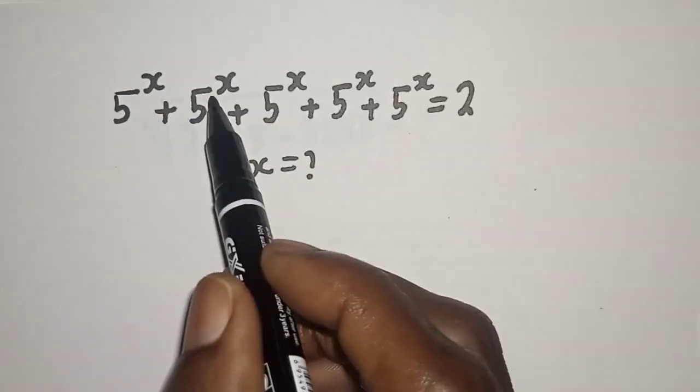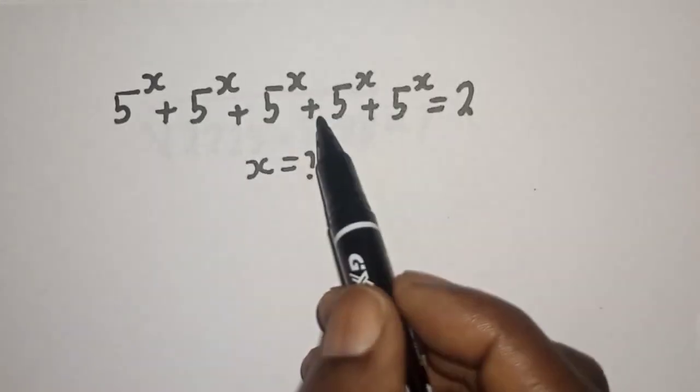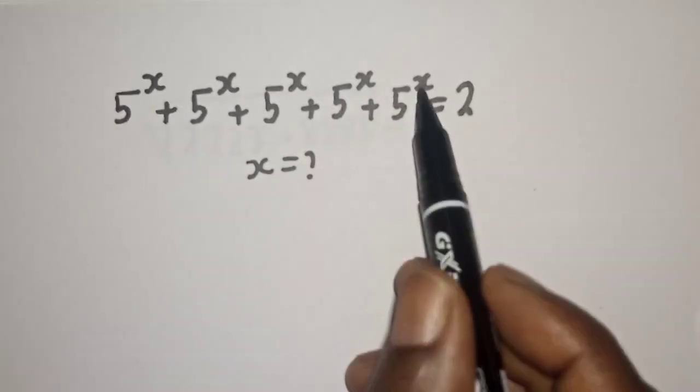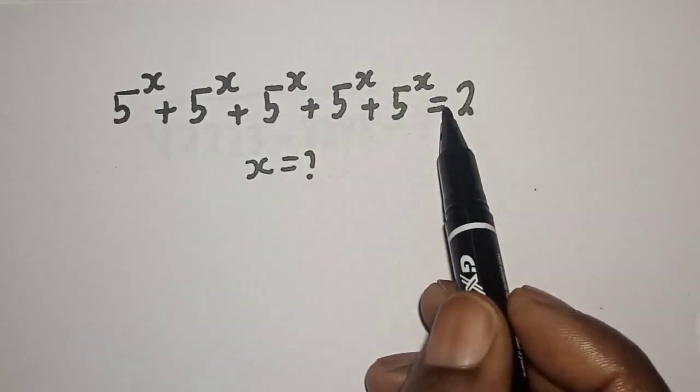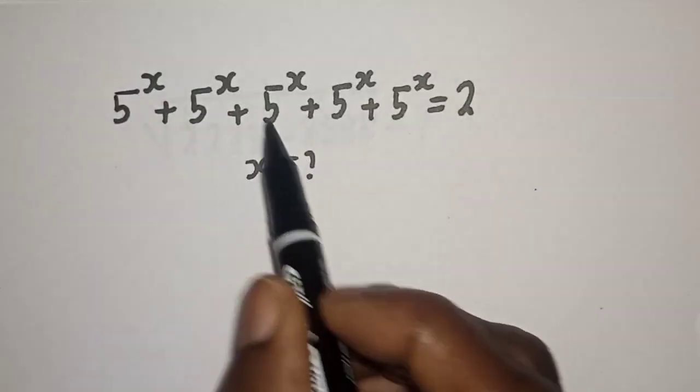5 raised to power s, plus 5 raised to power s, plus 5 raised to power s, plus 5 raised to power s, plus 5 raised to power s, is equal to 2. What is the value of s?